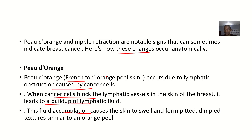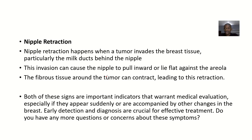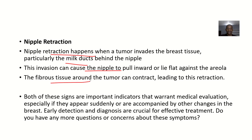Moving on to nipple retraction: nipple retraction happens when a tumor invades the breast tissue, particularly the milk ducts behind the nipple. This invasion can cause the nipple to pull inward or lie flat against the areola. The fibrous tissue around the tumor can contract, leading to this retraction. So the reason for nipple retraction is the tumor invading the milk ducts around the nipple.